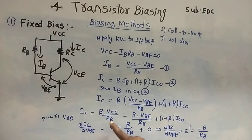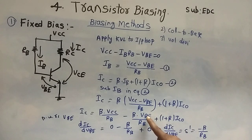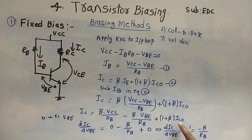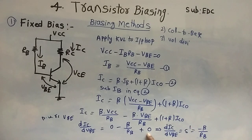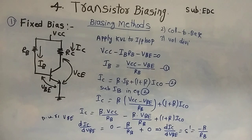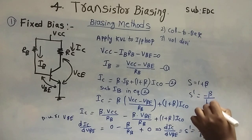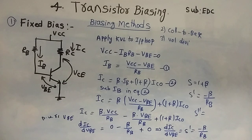Continuing the differentiation: beta is constant, VCC and RB are constants, so those terms are zero. The term (beta times VBE)/RB differentiated with respect to VBE gives beta/RB. The last term (1 plus beta) times ICO is constant, so its derivative is zero. Therefore, delta IC by delta VBE equals S dash equals minus beta divided by RB. So for a fixed bias network: S equals 1 plus beta, and S dash equals minus beta over RB.